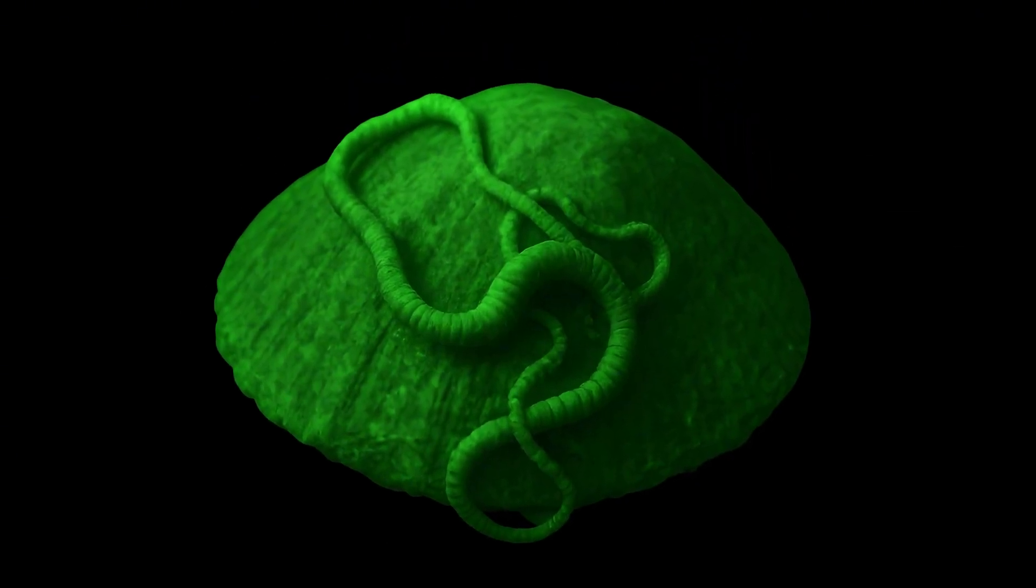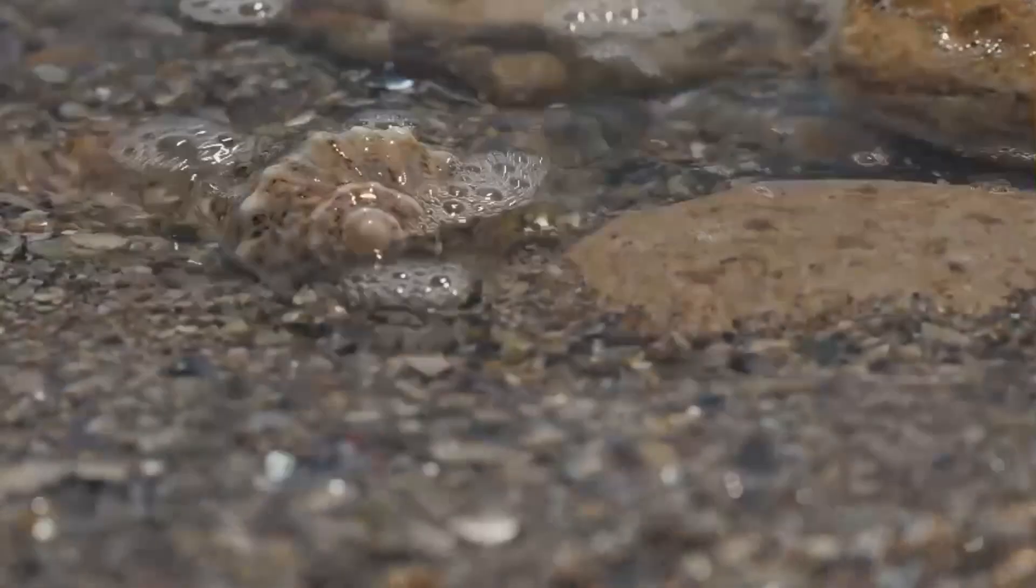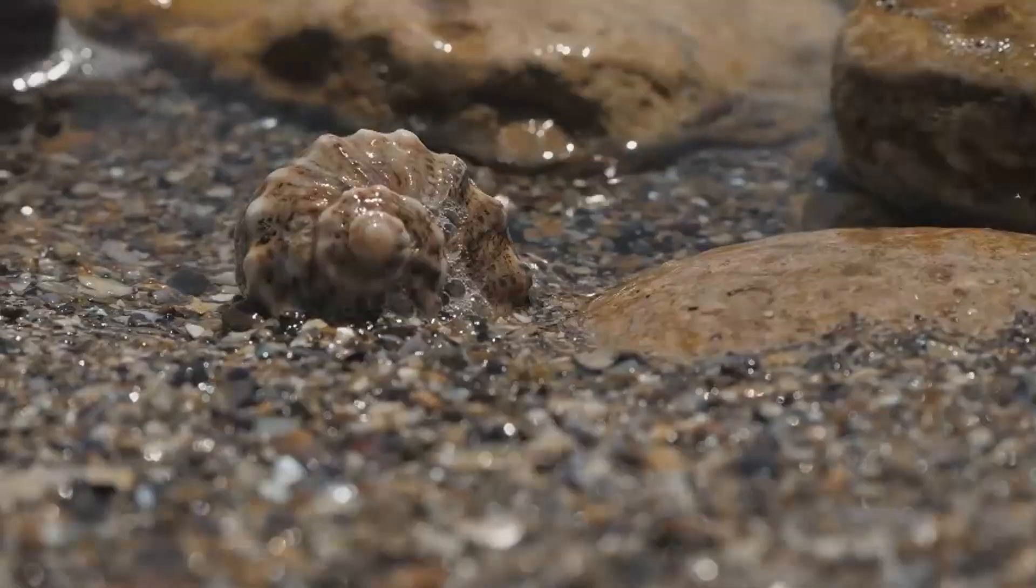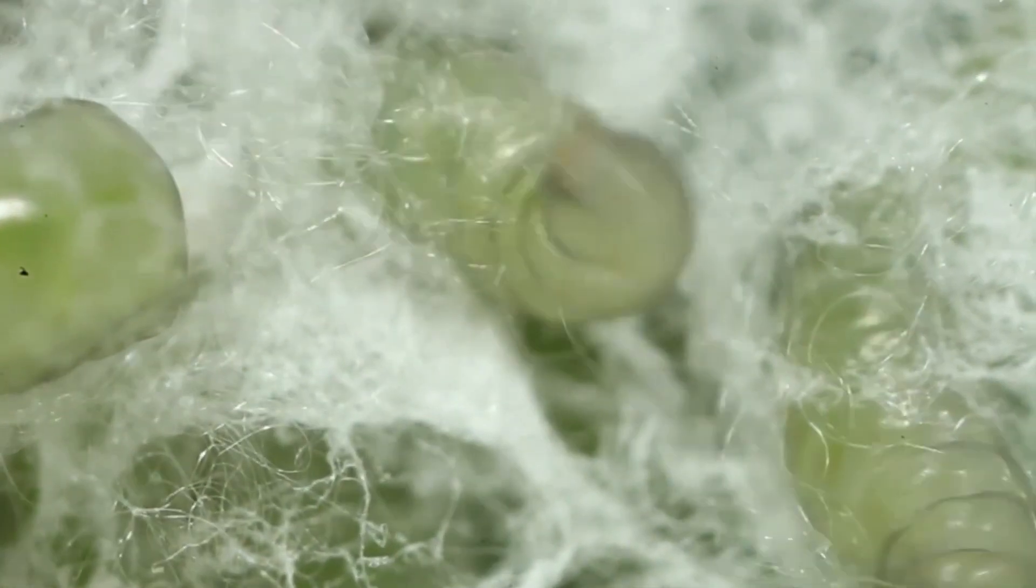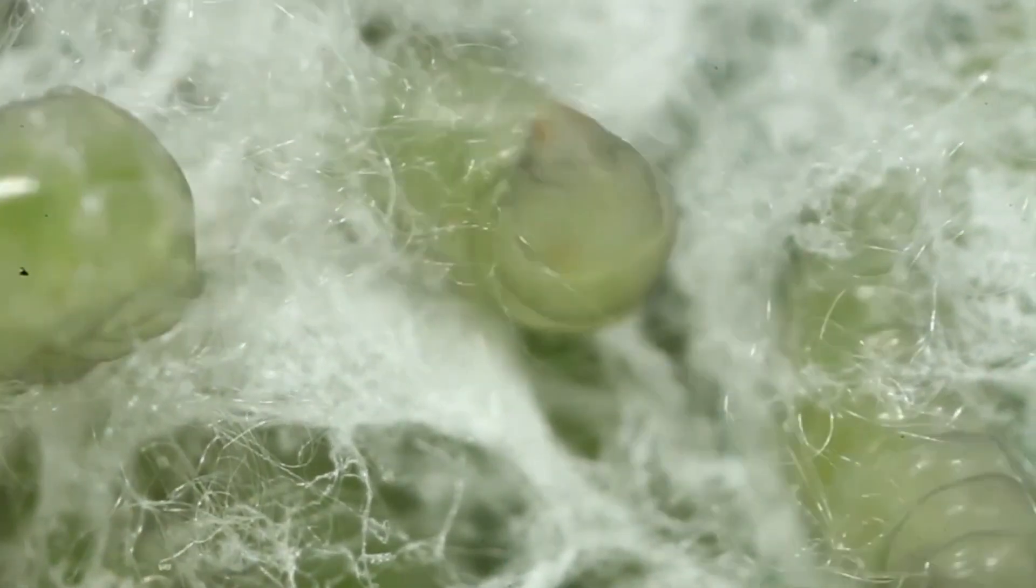Instead, it stayed attached and quietly took a share of every meal. The host kept feeding and living as usual, not realizing something nearby was stealing from it each time. This was one of the first signs of long-term exploitation in nature.